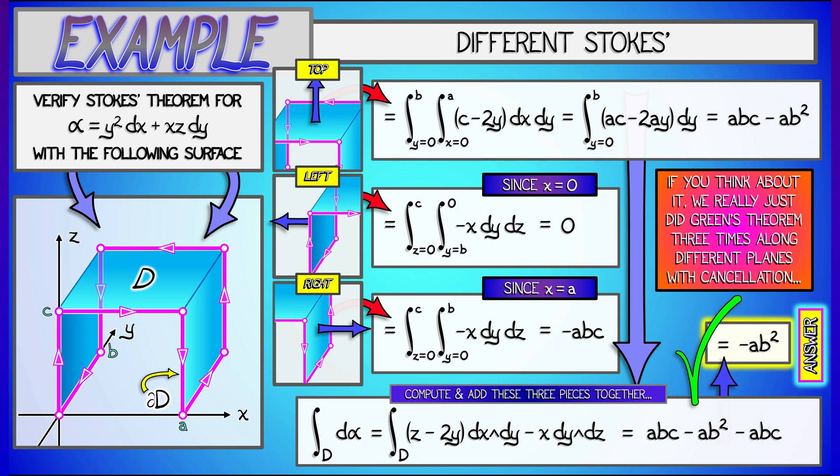And notice what we've really done. We've really just done three instances of Green's theorem along three different pairwise orthogonal planes. And we've done a little bit of cancellation on certain of the boundary edges. That is a nice connection between Stokes' theorem in 3D and Green's theorem in 2D. And it's as close as you're going to get to a proof or an idea of why Stokes' theorem is true at this point.